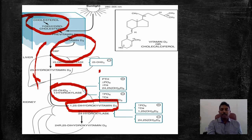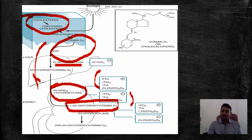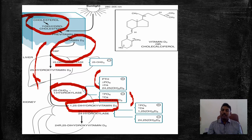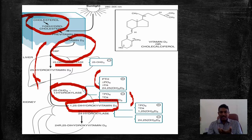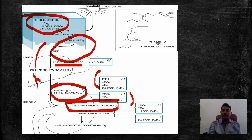As you see in the picture, parathyroid hormone, decreased phosphate, and decreased calcium are positive inducers of the enzyme 1-alpha-hydroxylase. Whereas increased phosphate, increased calcium, and 1,25-dihydroxy vitamin D3 levels are negative inducers of 1-alpha-hydroxylase. Also, 25-hydroxy vitamin D3 not only forms 1,25-dihydroxy vitamin D3, it also gets converted into 24,25-dihydroxy vitamin D3, which acts as a positive inducer for the enzyme.